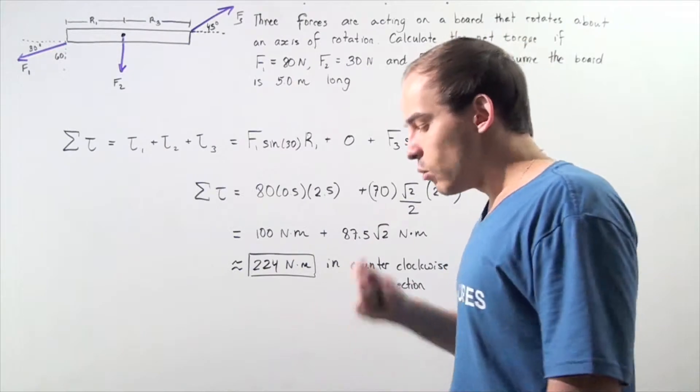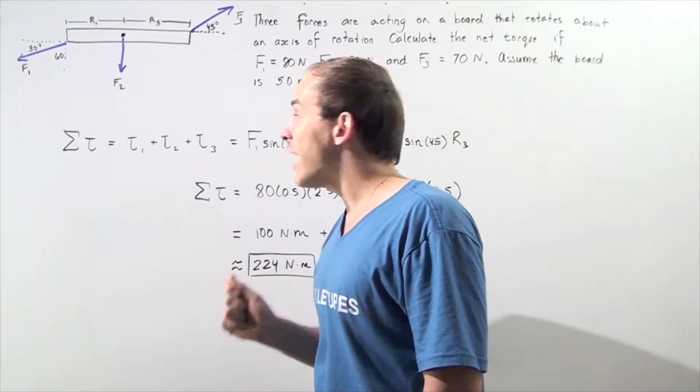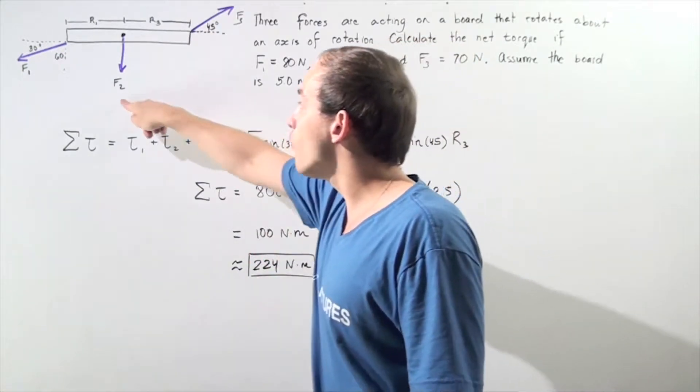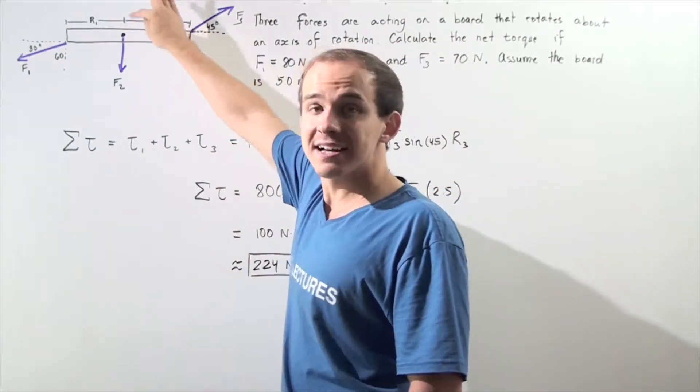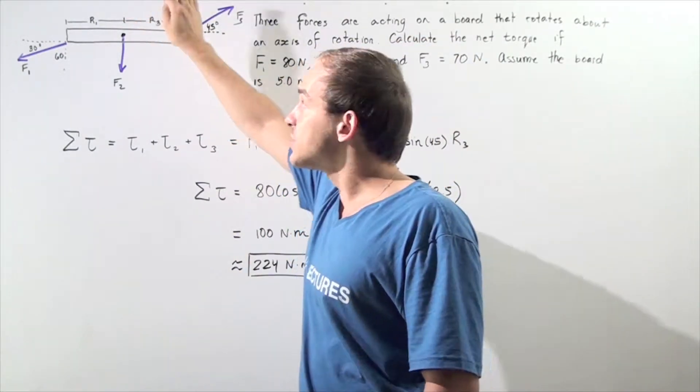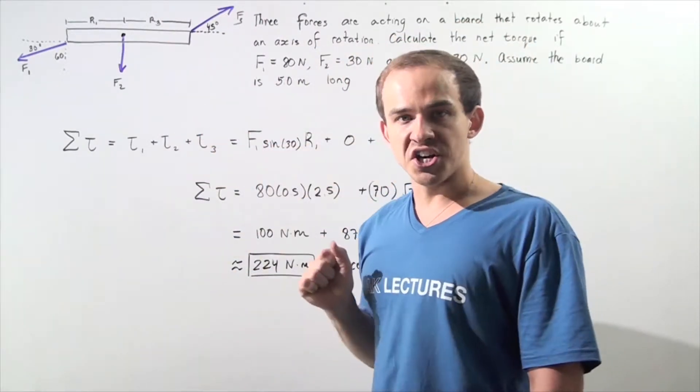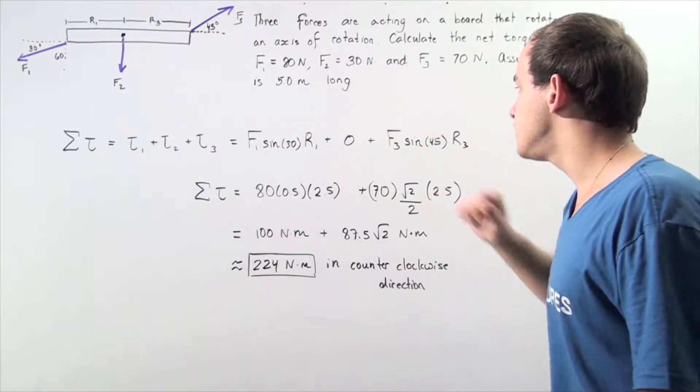What about torque 2? Notice torque 2 has a lever arm of 0, and that's because the force acts at the axis of rotation. Because the lever arm is 0, the torque is also 0. So torque 2 becomes 0.